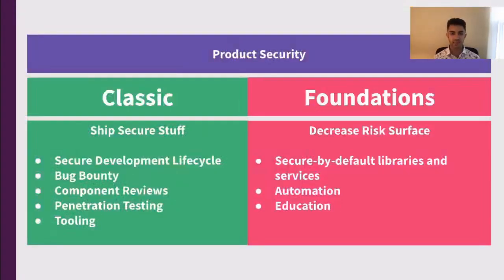At Slack, AppSec is product security. Our ProdSec organization is split into Classics and Foundations. Classics were the original team, and they focus on most of the traditional AppSec responsibilities, like reviewing new features, penetration testing, and running a healthy bug bounty program. The Foundations team focuses on reducing risk through automated tooling and creating secure-by-default libraries and patterns. Both teams work together to ensure the security of Slack using a multifaceted approach.